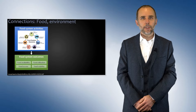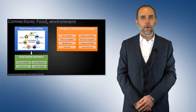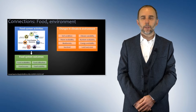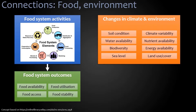Food systems do not exist in isolation — they depend upon our environment. Changes in our climate and environment have an impact on our food systems, and likewise, our food systems can have an impact on the climate and the environment. We'll explore that in the next few slides.